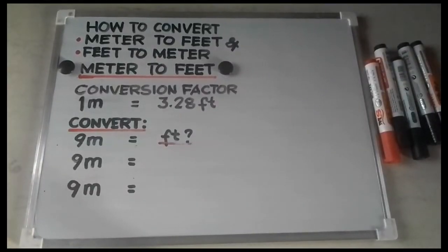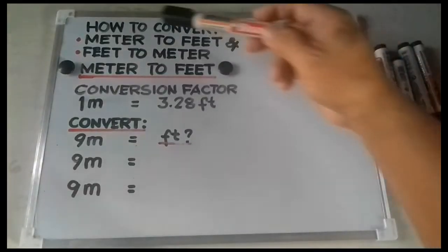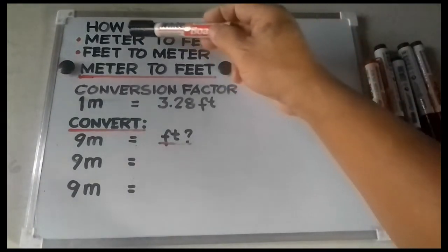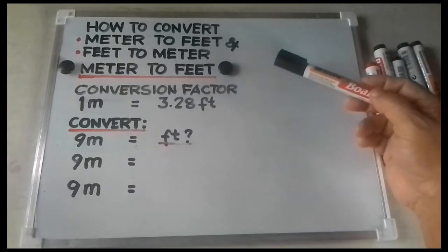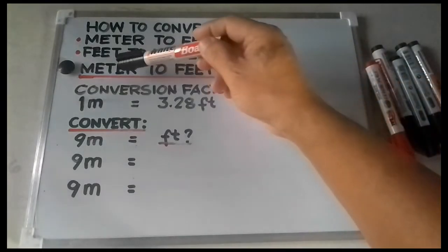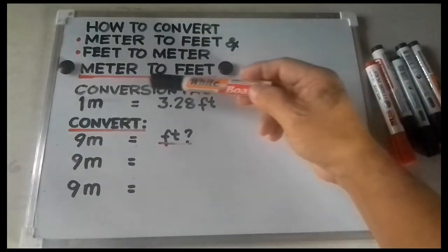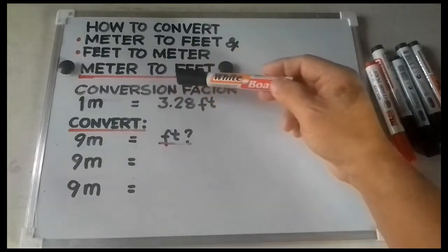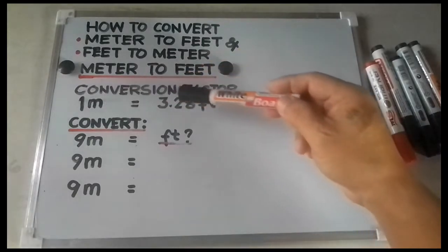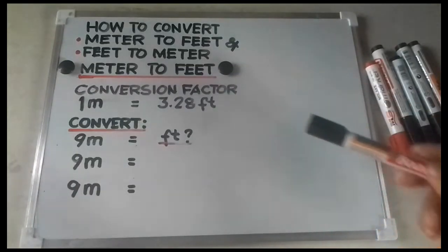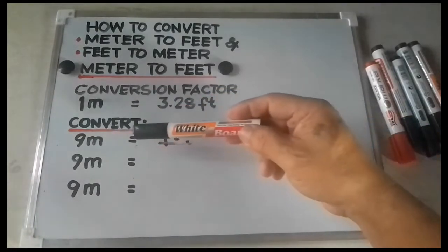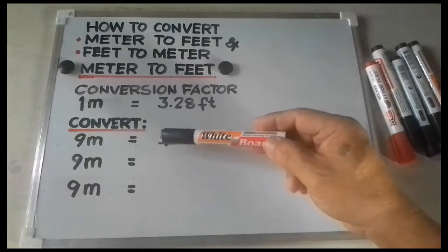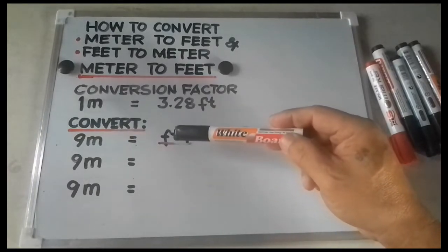Hello guys, for today's video I am going to discuss how to convert meters to feet and feet to meters. Now let's start with the first one, meter to feet. We have a conversion factor of 1 meter is equivalent to 3.28 feet. Now let's convert 9 meters. 9 meters is equal to how many feet?